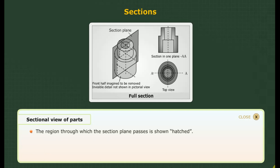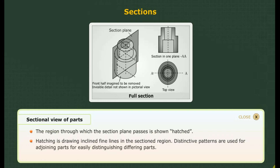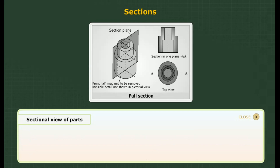The region through which the section plane passes is known as hatched. Hatching is the drawing of inclined fine lines in the sectioned region. Distinctive patterns are used for adjoining parts for easily distinguishing differing parts. The pattern of hatching is selected based on the type of material for the part.